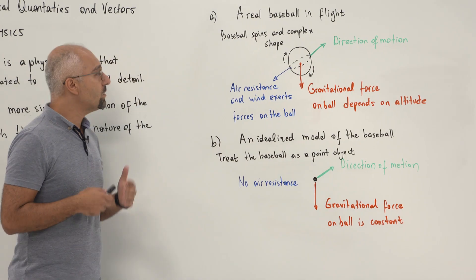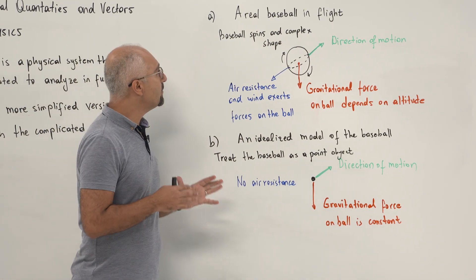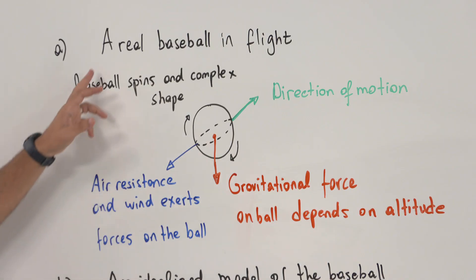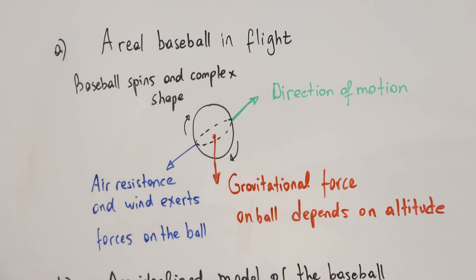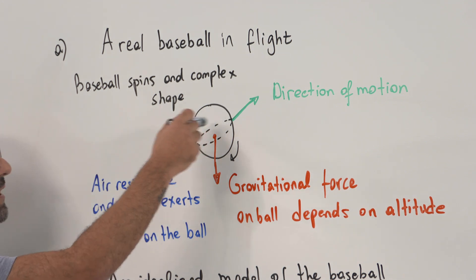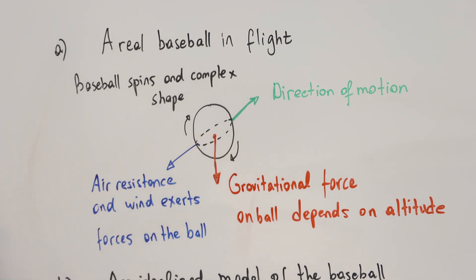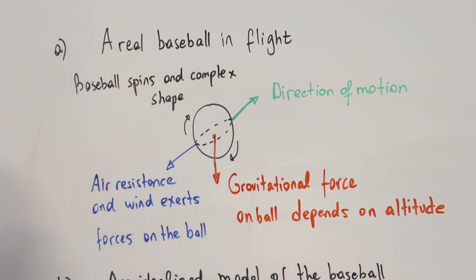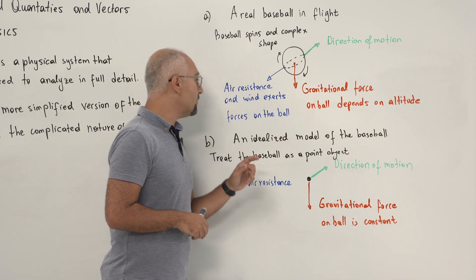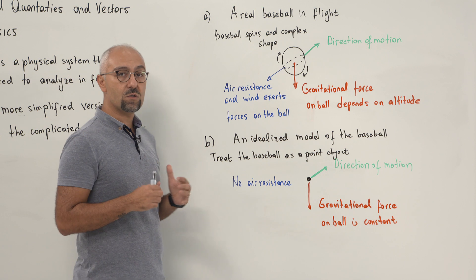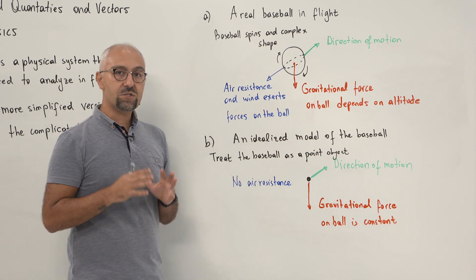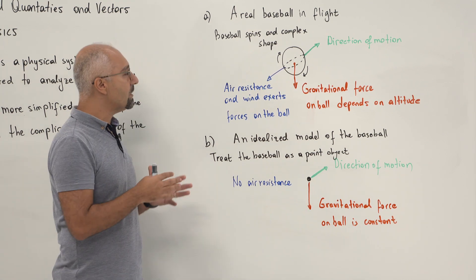Considering a physical system, we can give one example based on the baseball. This shows the real baseball in flight. The ball is spinning, and the green line shows the direction of motion, which will be important for the vector topic. The red line shows the gravitational force on the ball depending on altitude, and the blue arrow shows the air resistance and wind force exerted on the ball. This is the general treatment of the complex model in physics.